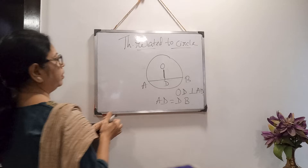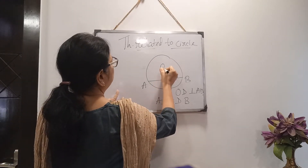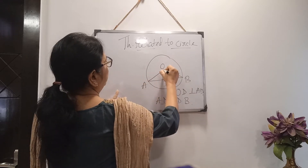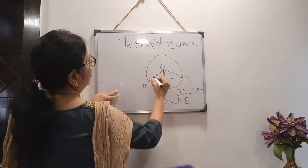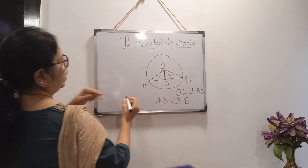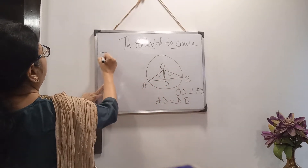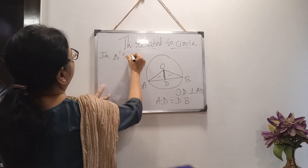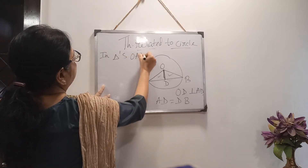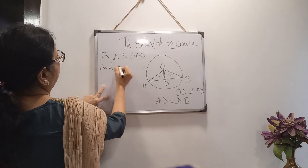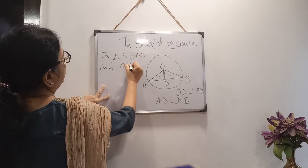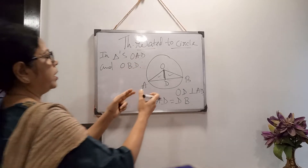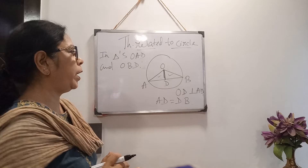For the construction, I will join OA and OB. Then we get two triangles: triangle ODA and triangle ODB. I am trying to prove that these two triangles are congruent.